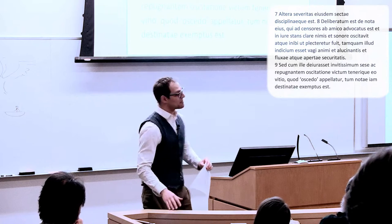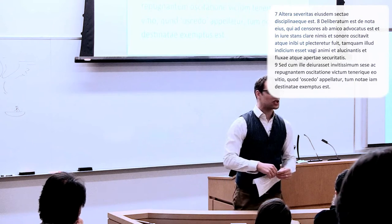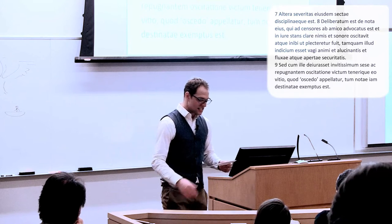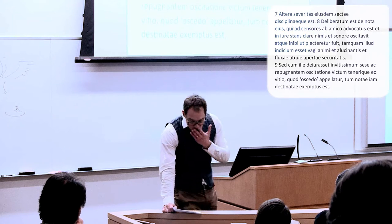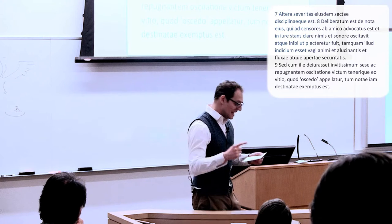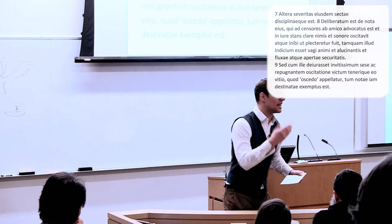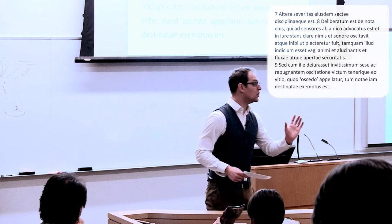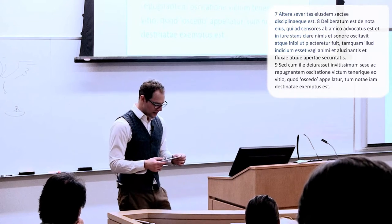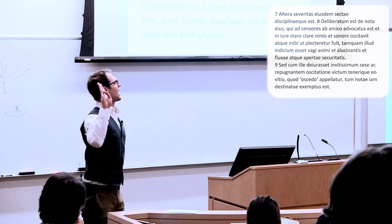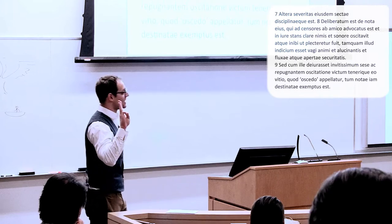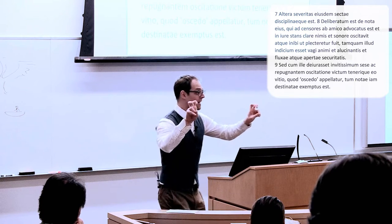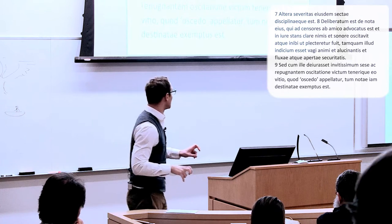Altera severitas eiusdem sectae disciplinaeque est. Deliberatum est de nota, id est de poena, eius qui ad censores ab amico advocatus est et in iure stans clare nimis ac honore oscitavit. Atque inibi ut plecteretur fuit, id est in eo erat ut puniretur ille qui oscitaverat, tamquam illud indicium esset vagi animi et alucinantis et fluxae atque apertae securitatis. Sed cum ille deiurasset invitissimum, non volui, invitissimum se ac repugnantem oscitatione victum tenerique eo vitio quod oscedo appellatur, tum notae iam destinatae exemptus est.